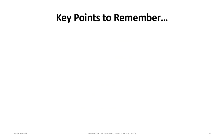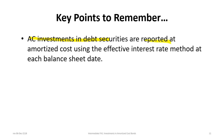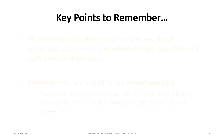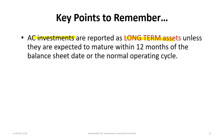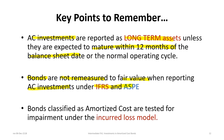Some key points to remember: AC investments in debt securities are reported at amortized cost using the effective interest rate method at each balance sheet date. Brokerage fees are typically added to the investment cost and amortized going forward. AC investments are reported as long-term assets unless expected to mature within 12 months of the balance sheet date or the normal operating cycle. Bonds are not remeasured to fair value when reported as AC investments under ASPE or IFRS. Bonds classified as amortized cost are tested for impairment under the incurred loss model.